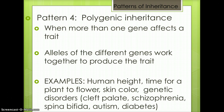Pattern 4 is polygenic inheritance. This is when one or more genes affect a trait, and alleles of the different genes work together to produce the trait. Examples include human height, time for a plant to flower, skin color, and genetic disorders such as cleft palate, schizophrenia, spina bifida, autism, and diabetes.